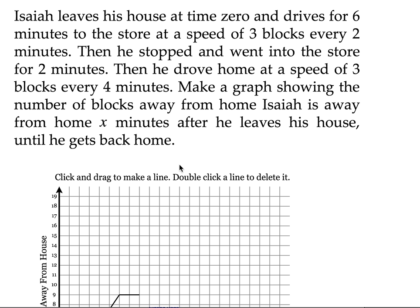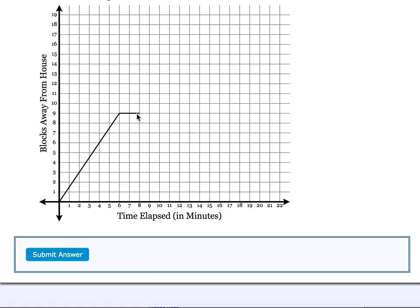After he's in the store, he's going to drive back home at a speed of 3 blocks every 4 minutes. Now I'm going to click down again. So 3 blocks, that's going down 3 for every 4 minutes. Over 4. So down 3 over 4. I'm going to go down 3 and over 4 again. Down 3 and over 4 again.